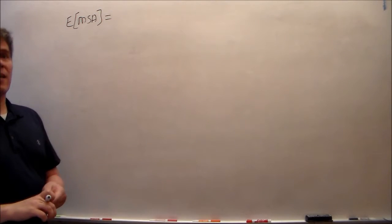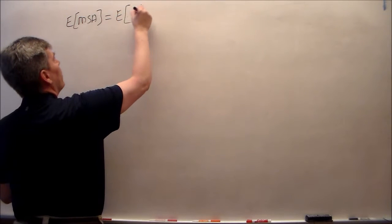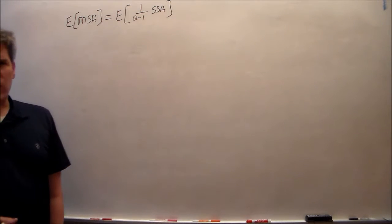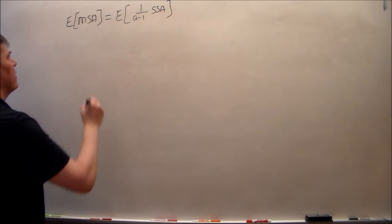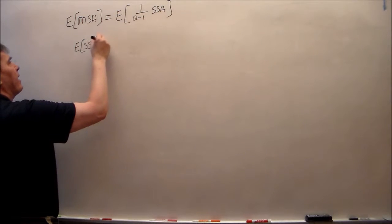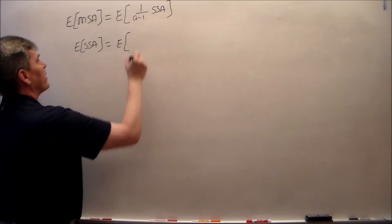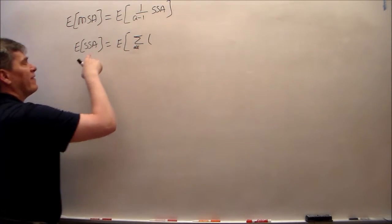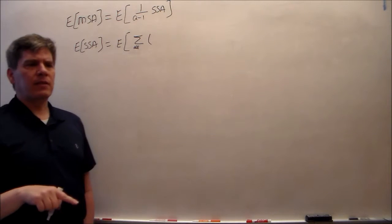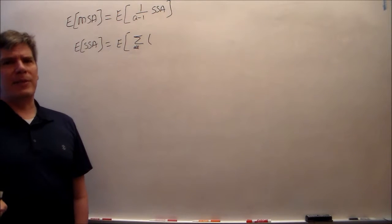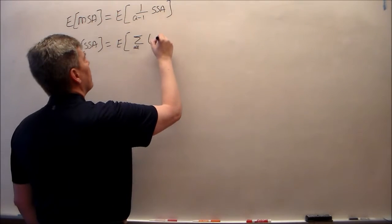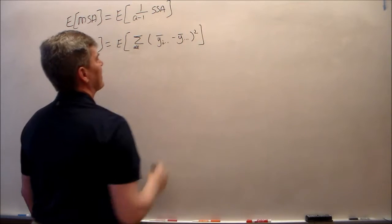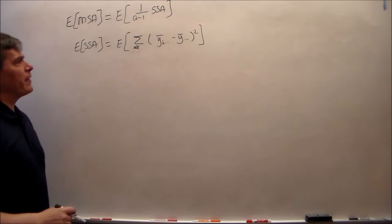Notice that the mean squared A is just equal to 1 over (A minus 1) times the sum of squares A. So keep that in mind — I'm going to work with the sum of squares A for most of this. The expected value of the sum of squares A: what is the formula for the sum of squares A? It's just adding up over everything. The first subscript is A, so that's the one that keeps its letter; everything else is going to be dotted. And that's the usual formula for this.